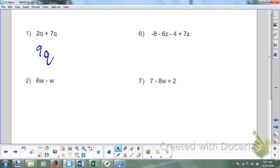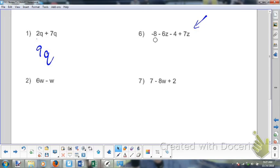Now of course the more terms we have the more complicated it is. So in this case here there is subtraction. I have four terms. I have a negative eight, a six Z, a four, a seven Z.